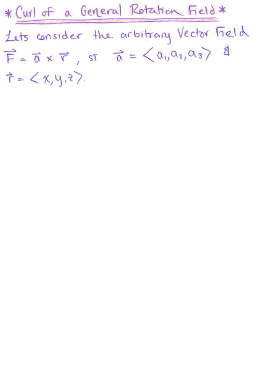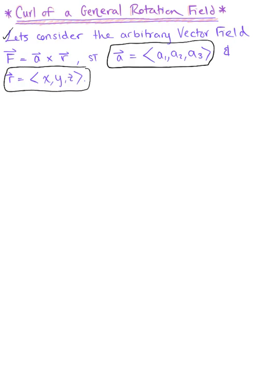We want to consider the curl of a general rotation field in space. We begin by considering an arbitrary vector field f, defined by the cross product of vectors a and r, where vector a has components a₁, a₂, a₃, and vector r has components x, y, and z. To define the components of the general rotation field, let's go ahead and compute this cross product.